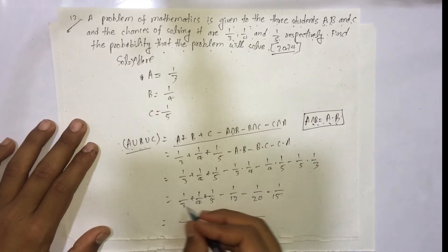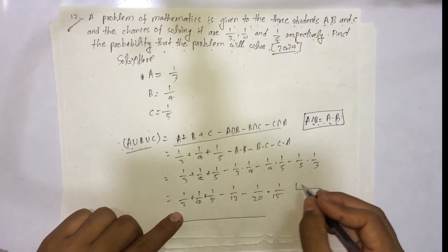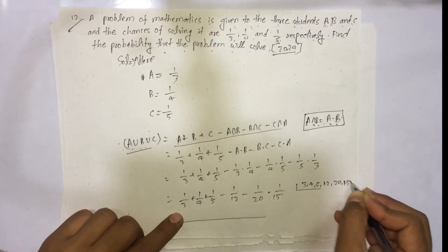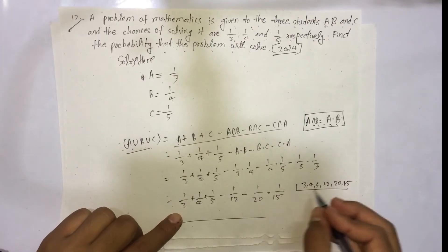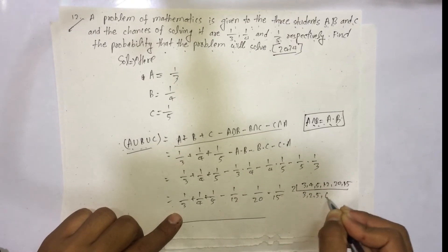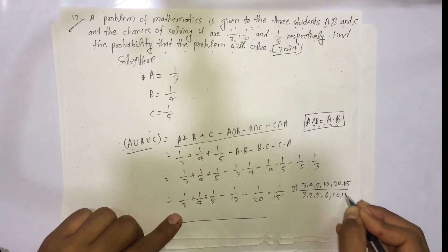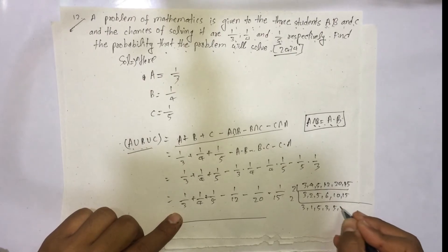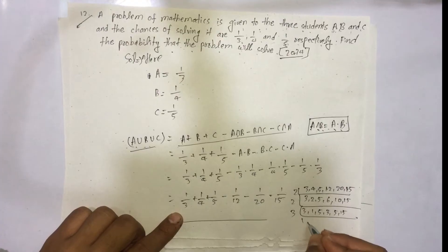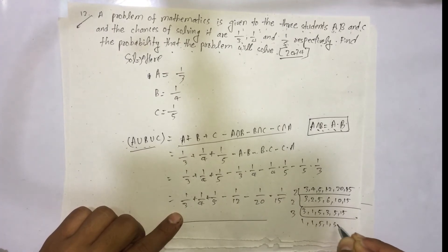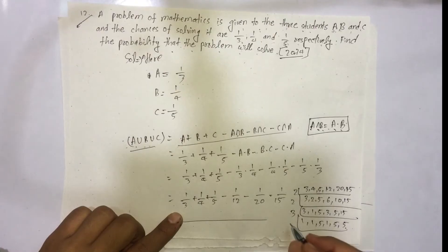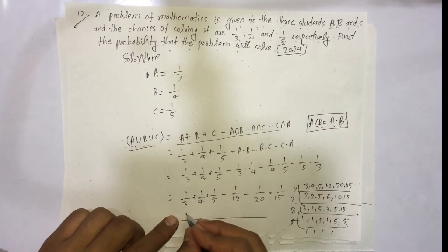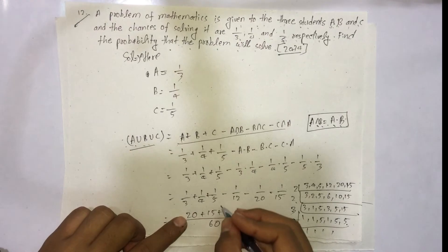Now finding the LCM to add these fractions. The LCM of 3, 4, 5, 12, 20, and 15 is 60. Computing the numerators: combining the positive terms and subtracting the negative terms to get the final probability.